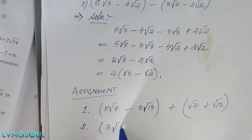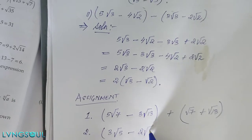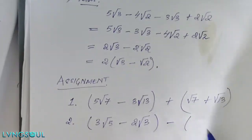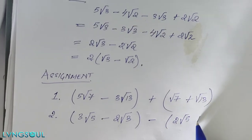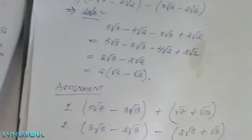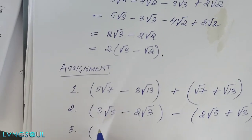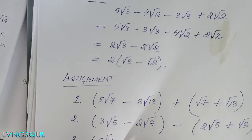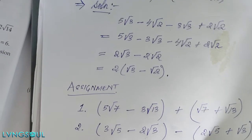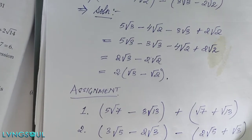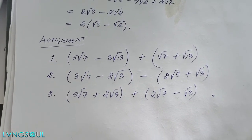Next problems: root 5 minus 2 root 3 minus 2 root 5 plus root 3. And: 5 root 7 plus 2 root 3 plus 2 root 7 minus root 3. These are assignment questions involving irrational numbers — simplify and we are done.